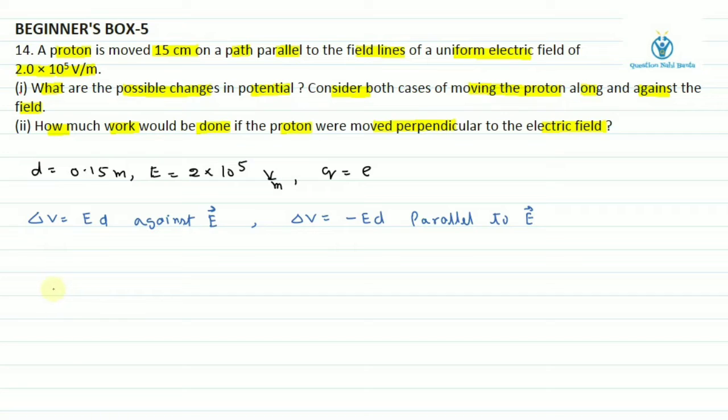To pehle part ka answer nikalenge. Delta v barabar ed to yeh aayega 0.3 into 10 raise to power 5 volt yeh aayega against the electric field ke liye aur minus 0.3 into 10 raise to power 5 volt aayega parallel to electric field ke liye. Yeh to hamare pehle part ke answer hue.